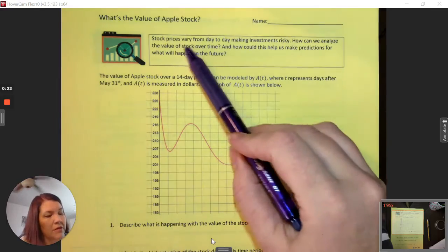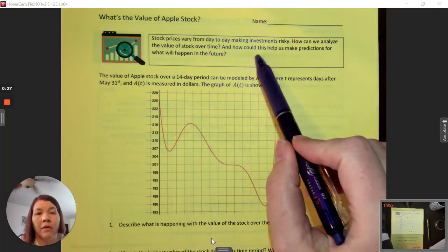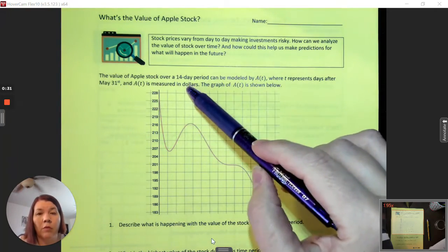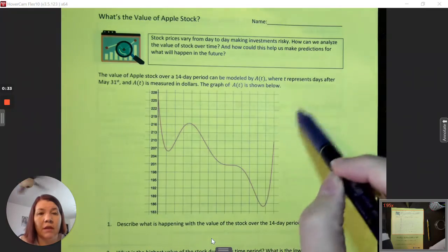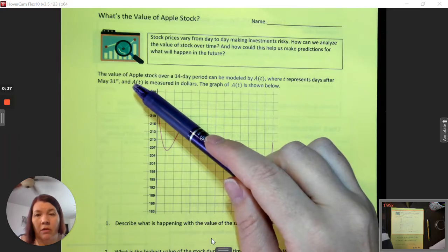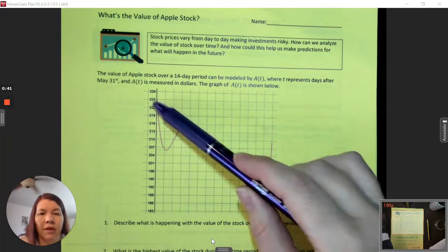The value of stock prices vary from day to day making investments risky. How can we analyze value of a stock over time? The value of Apple stock over a 14-day period can be modeled by A(T) where T represents the days after May 31st and A(T) is measured in dollars. The graph of A(T) is shown below.